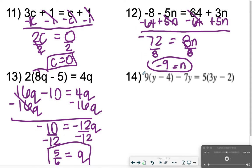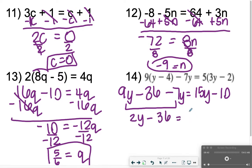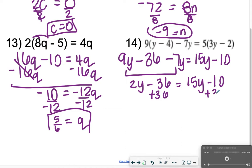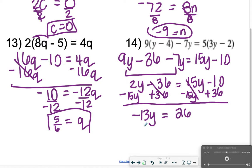14, I've got double distribution, so 9 distributing to y minus 4 is 9y minus 36, minus 7y, and then over here, 5 times 3y is 15y, 5 times minus 2 is minus 10. Let's go ahead and combine like terms on this left side. 9y minus 7y is 2y, so 2y minus 36 equals 15y minus 10. I'm going to add 36 to the right side and subtract 15y on the left side. I'm kind of doing my double steps here. 2y minus 15y is negative 13y, and then negative 10 plus 36 is 26, so now I'm going to divide both sides by negative 13, and y is equal to negative 2 for number 14.